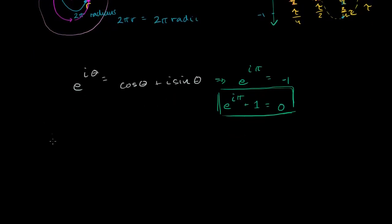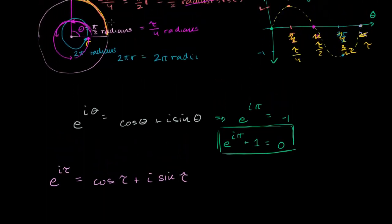If we take e to the i tau, that gives us cosine of tau plus i sine of tau. Tau radians means we've gone all the way around the unit circle, so we're back at the beginning. Cosine of tau is going to be equal to 1, and sine of tau is equal to 0. So e to the i tau is equal to 1.